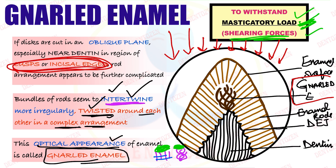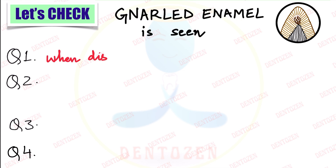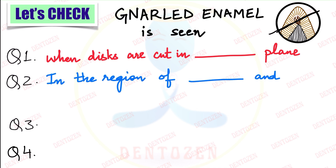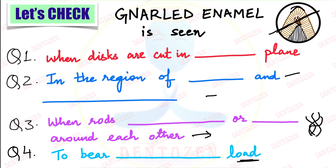That is all about gnarled enamel — what you have to write and the diagram you have to make. Let's check what you've learned. First question: gnarled enamel is seen when discs are cut in what plane? Second: gnarled enamel is seen in the region of which two areas — cusp tip region, incisal region, or cervical region? Third: it is seen when rods do what to each other — remember those two important words. And finally: to bear what kind of forces does this twisting happen in the cusp tip or incisal region?